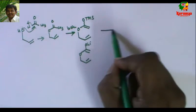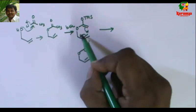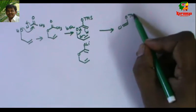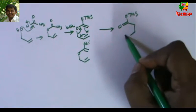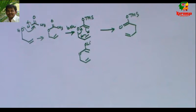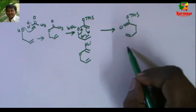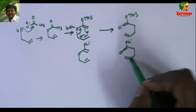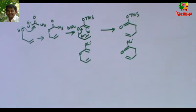If it undergoes 3,3-sigmatropic rearrangement, we get an acid. So by this rearrangement we can get aldehyde, ester, as well as acid.